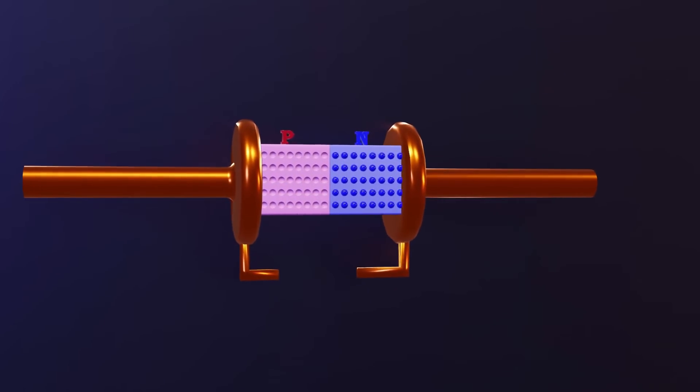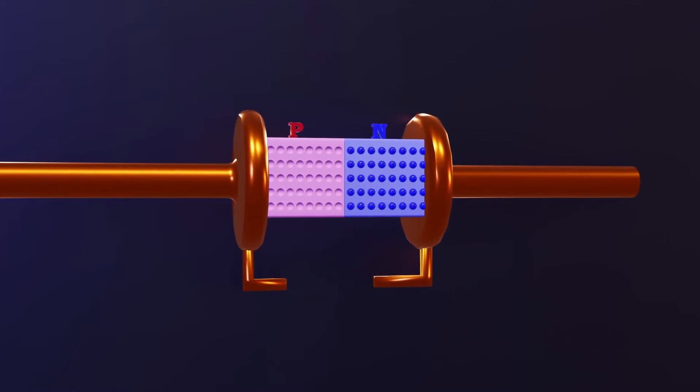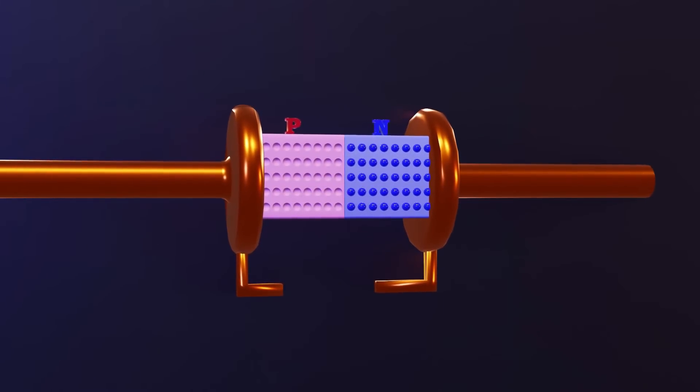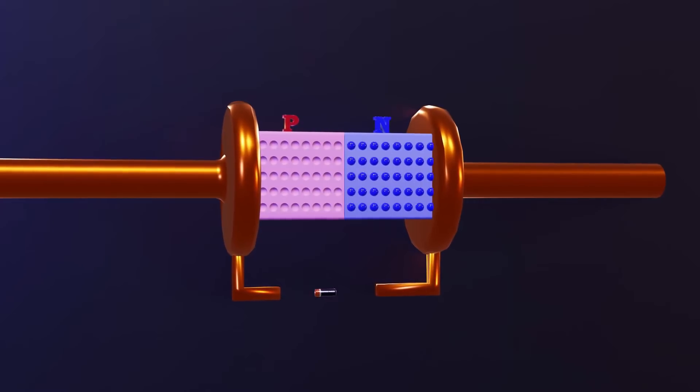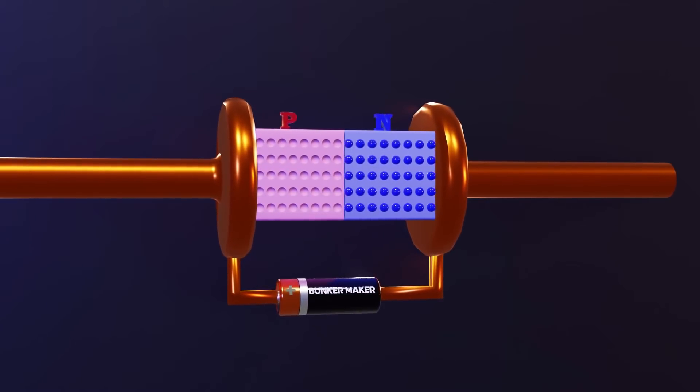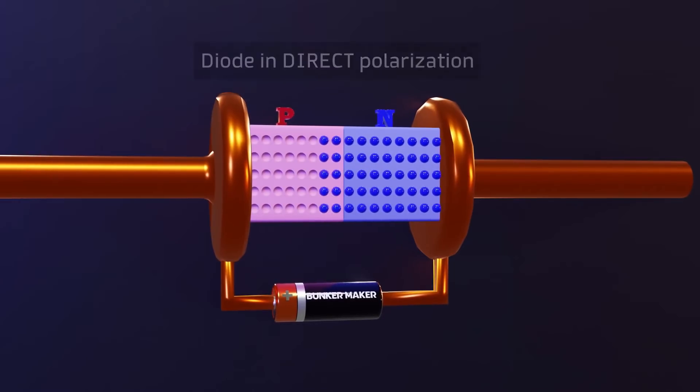What happens when we create a P-N junction is that electrons can only move in one direction from the semiconductor type N to type P, when the positive pole of a voltage source is positioned in the semiconductor type P and the negative pole to the opposite side.